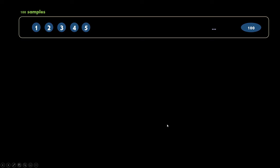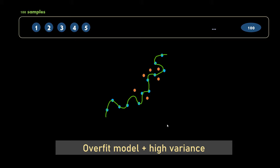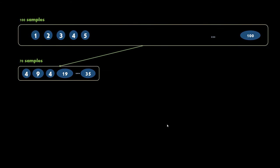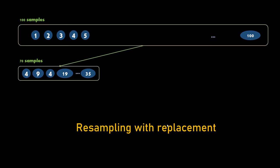Let's say I have a dataset of 100 samples. When I train a machine learning model, one problem I might encounter is overfitting, which happens due to the nature of the dataset, your machine learning methodology, etc. Usually an overfitting model has a problem of high variance. To tackle this, one thing you can do is create a smaller subset of 70 samples using resampling with replacement.